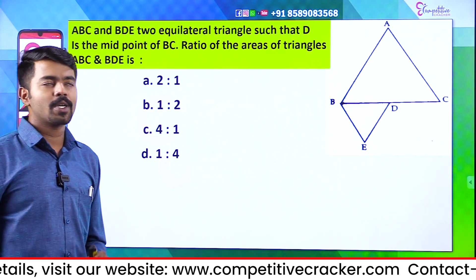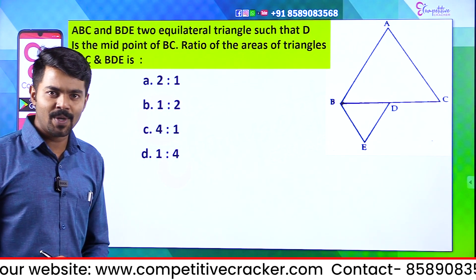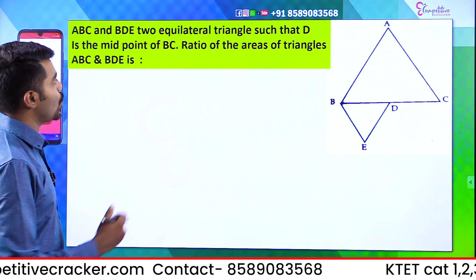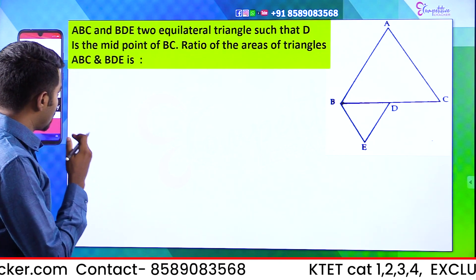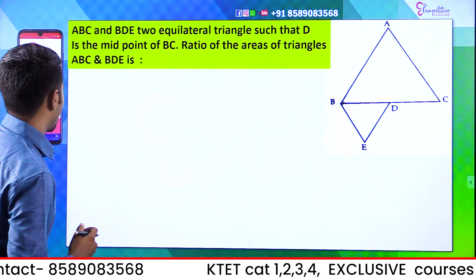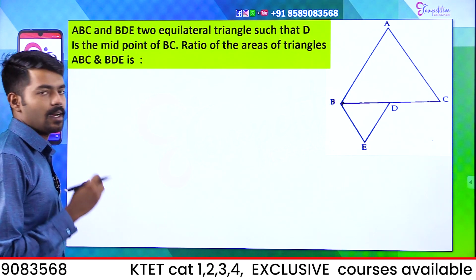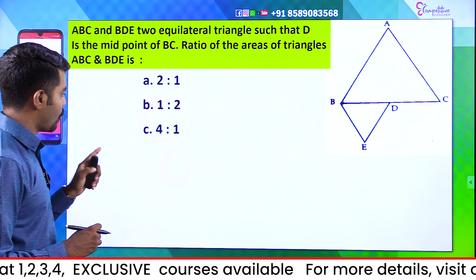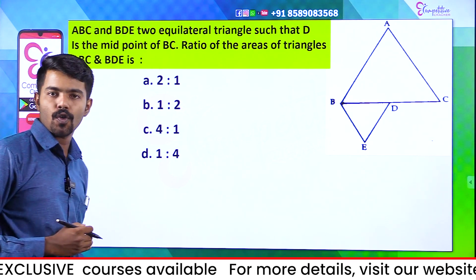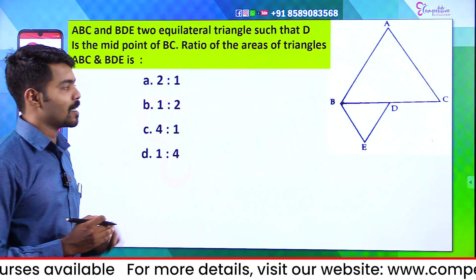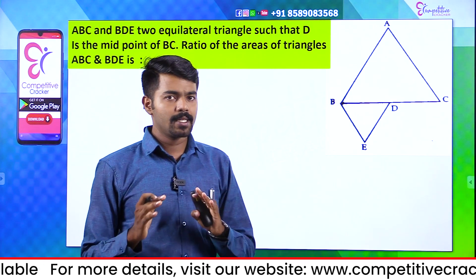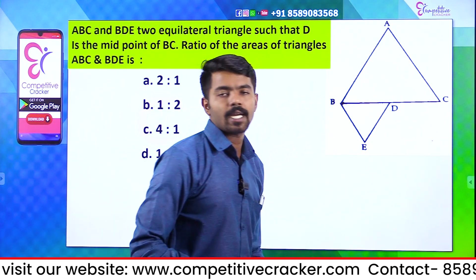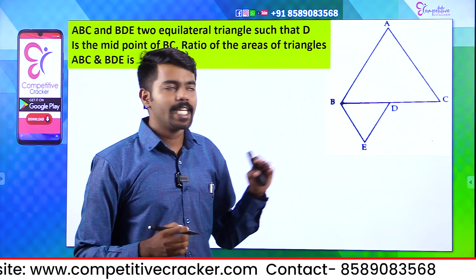This is the most important thing. If you have a question paper, you will have to look at it like this. Triangle ABC and BDE are two equilateral triangles such that D is the midpoint of BC — find the ratio of the areas. We have two equilateral triangles. Equilateral triangles have three equal angles and three equal sides.